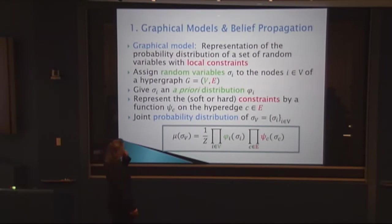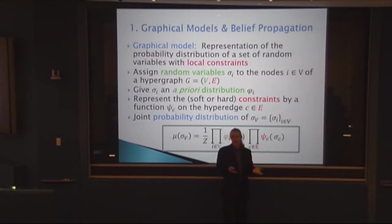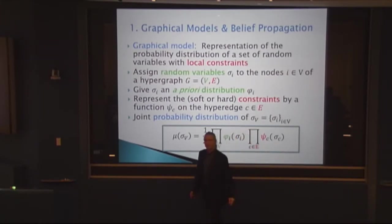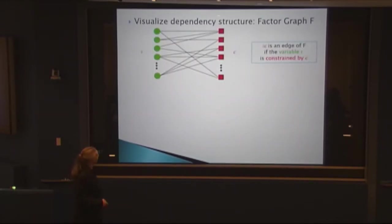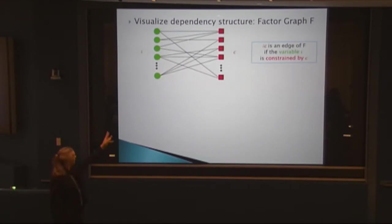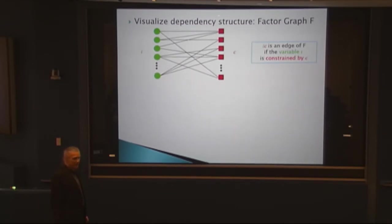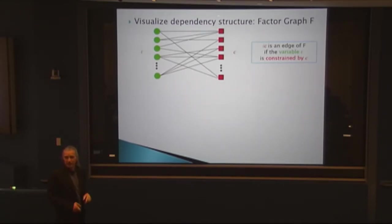Once we have this setup, we can visually represent it with what's called a factor graph. In the factor graph, you put all the variables on the left and all the constraints on the right. Then you put an edge between a variable and a constraint if that variable is involved in that constraint. So if there's an edge between Jennifer and me, we put a constraint node on the right and link it to both of us.